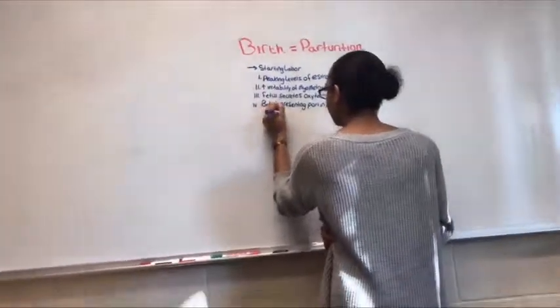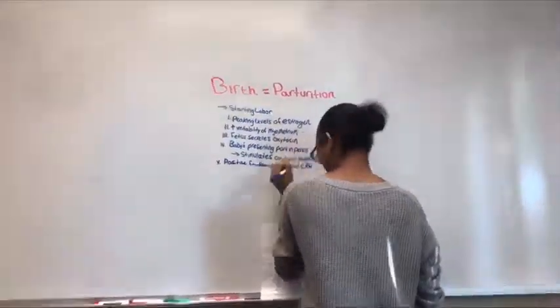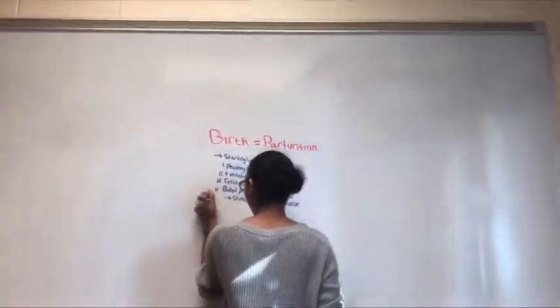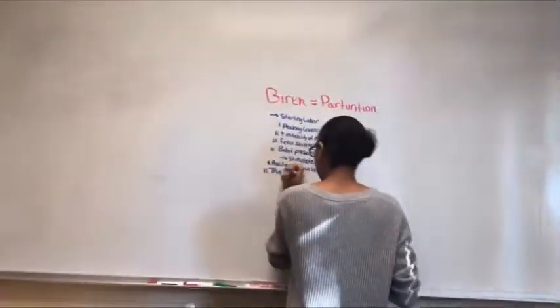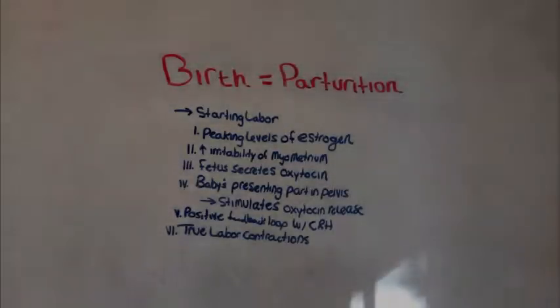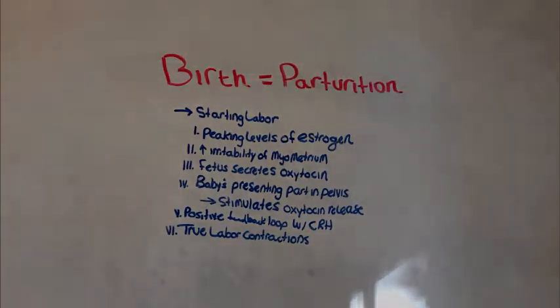Birth consists of four stages. Starting with labor, there's peaking levels of estrogen, which triggers the labor. The fetus then begins secreting oxytocin, which then stimulates uterine contraction, which then stimulates placenta to release prostaglandin, which then promotes uterine contraction and cervical ripening. The baby's presence in the pelvis stimulates mechanoreceptors in the cervix, which stimulates the hypothalamus to release oxytocin. This starts a positive feedback loop with CRH or corticotropin releasing hormones. Corticotropin releasing hormones cause ACTH and cortisol levels to rise, which promotes maturation of the fetus's lungs. Now, true labor contractions will occur.